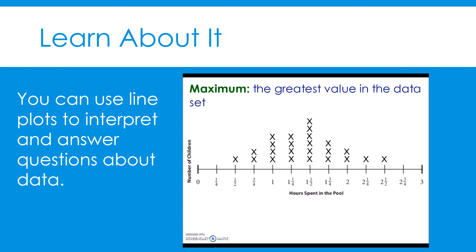Next, let's find the maximum. The maximum is the greatest value in the data set. Let's look at our number line. I see that two and one-half is the greatest value in this data set that still has an X above it. Therefore, two and one-half is the maximum. Note that two and three-fourths and three are both on the number line and greater than two and one-half; however, they don't have any data points since there are no X's above them, so they can't be the maximum.